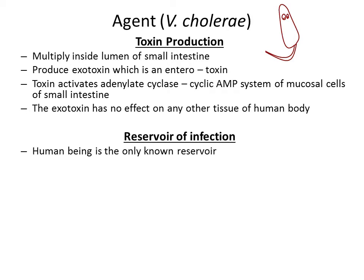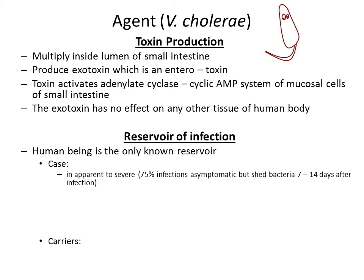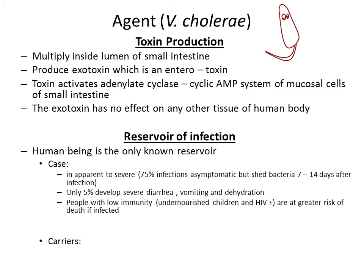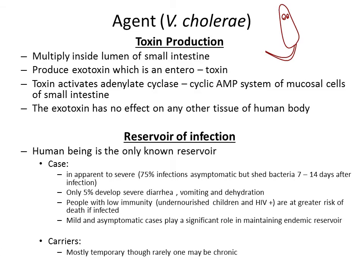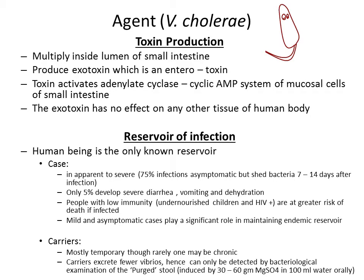The human being is the only known reservoir of infection, which can be a case or a carrier. Cases range from inapparent infection to severe disease. 75% of infections may be asymptomatic, but they shed bacteria for 7 to 14 days after infection. Only 5% of infections develop severe diarrhea, vomiting, and dehydration. Mild and asymptomatic cases play a significant role in maintaining the endemic reservoir. Carriers are mostly temporary, though rarely one may become a chronic carrier. Carriers excrete far fewer vibrios, so a carrier can only be detected by bacteriological examination of a purge stool, induced by giving 30 to 60 grams of magnesium sulphate dissolved in 100 ml of water orally.